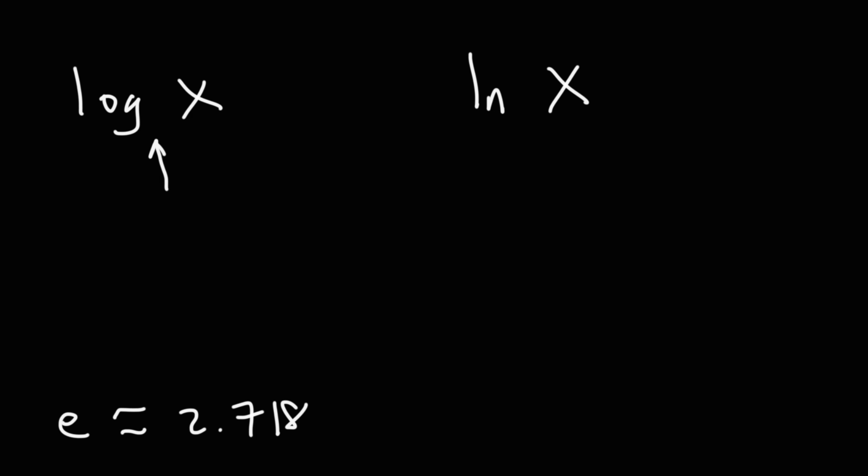Now log can have any base. This could be base 4, it could be base 7, it could be base 9. However, if you don't see a number, it's assumed to be base 10. So if you see log Y and there's no base, it's assumed to be base 10. If you see log 4Z, then that's the base. So if it's not specified, the base is always 10 for logs. And for natural logs, the base is always E.